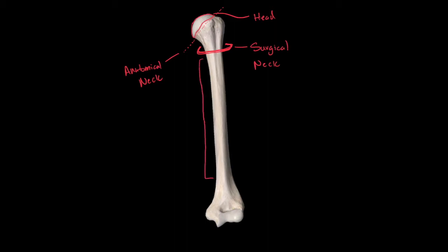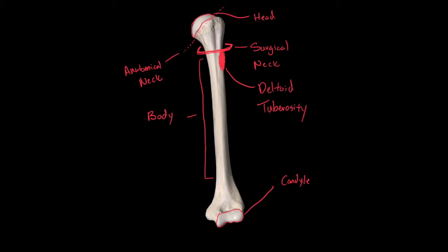We also have the body of the humerus, and then down here this region is going to be called the condyle of the humerus. Right here on the lateral proximal aspect of the humerus there's a roughened region — you can feel this if you're studying off of models or real bones. This roughened patch is going to be called your deltoid tuberosity, named because the deltoid muscle inserts into this rough patch.